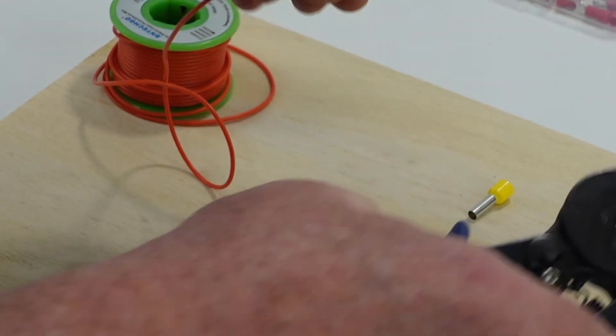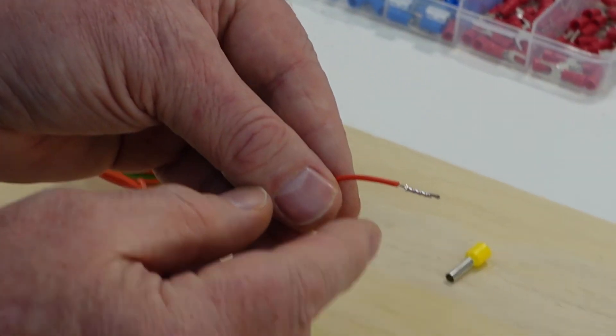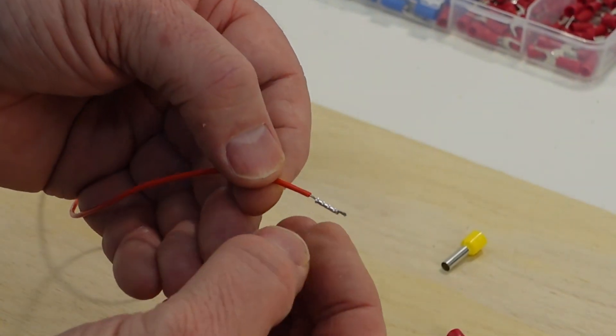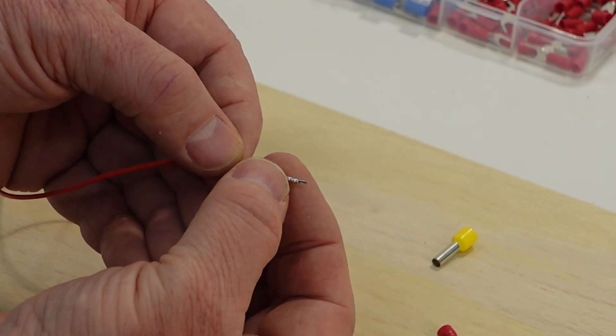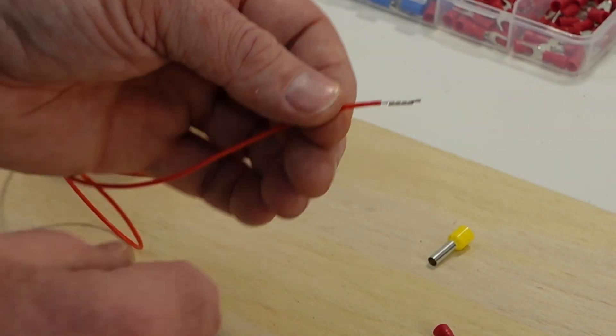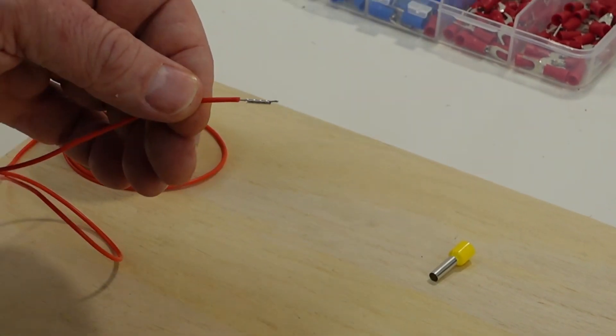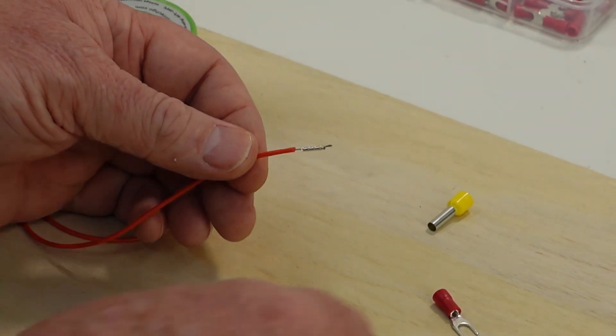This ferrule, as small as it is, is even a little too big for this wire. So we're just kind of moving on it. And ideally, if we were doing a ferrule, we wouldn't want that. But in this case, it's going to be okay.